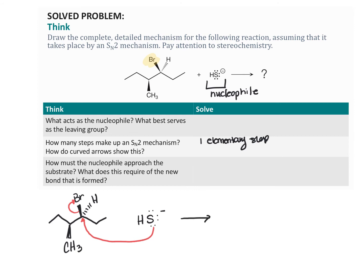Following the curved arrows to draw the products: the new bond formed is between sulfur and the carbon. We need to remember that the stereochemistry here is going to change — where the bromine was on a wedge before, the HS will be on a dash. So we put the hydrogen in, the sulfur attaches keeping the hydrogen, and then we draw our leaving group, bromine minus. That is the product of this one-step SN2 mechanism. We'll practice drawing these more in class because it really helps with understanding mechanisms.